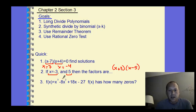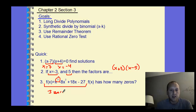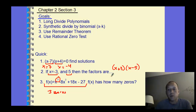The last quick example is realizing how many zeros we have from a given polynomial. We look at the degree — a degree of 3 means we should have three zeros. They may not be distinct, so they could be the same value, or they may be imaginary, but we have three zeros to make that polynomial.